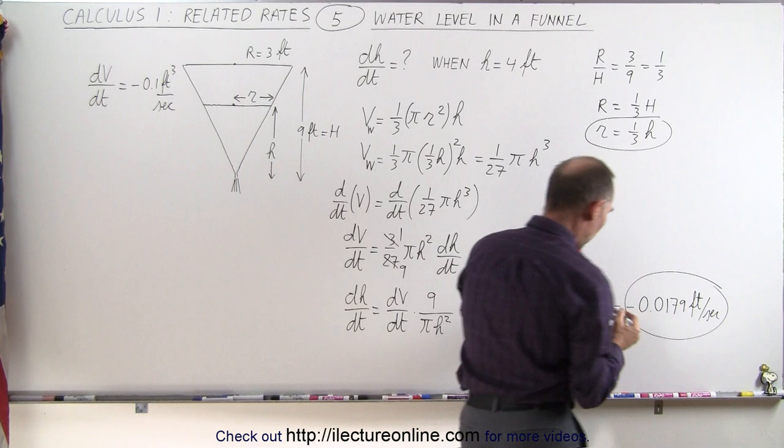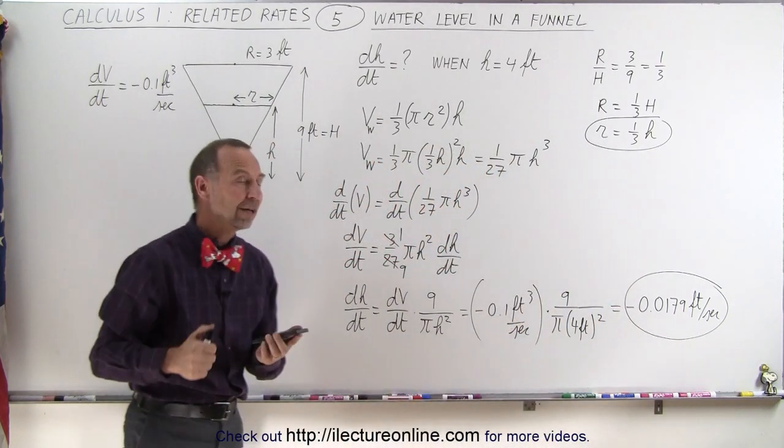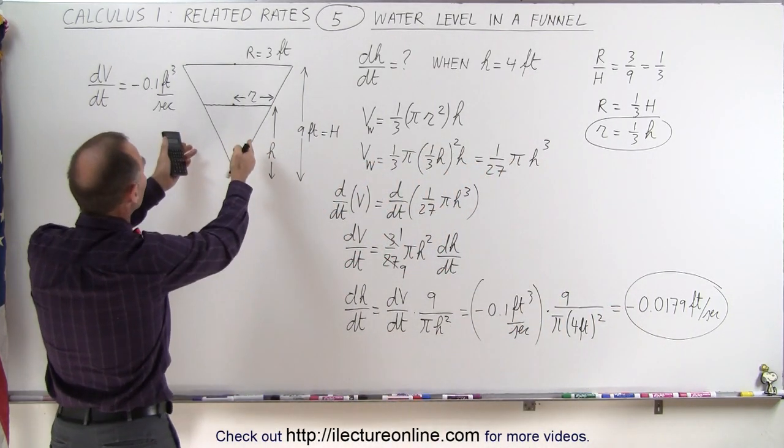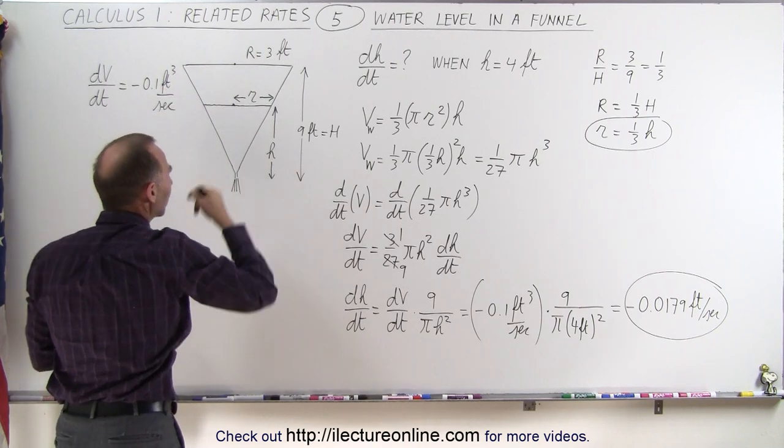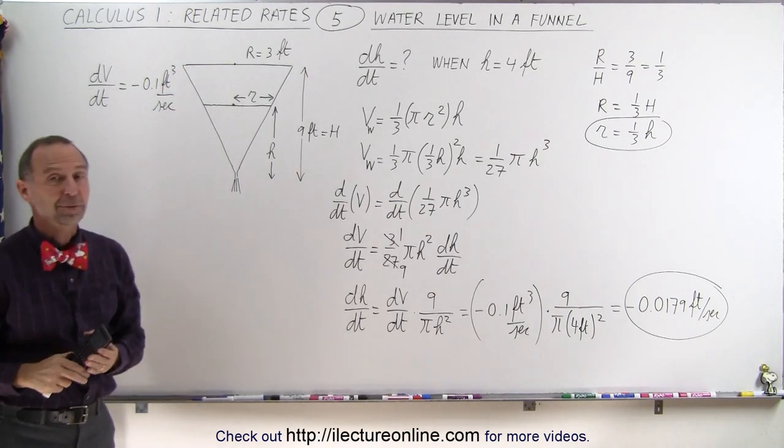So that is the rate at which the water level is dropping if the funnel loses 0.1 cubic feet per second at the bottom. And that's how it's done.